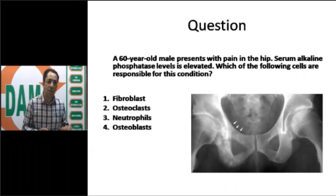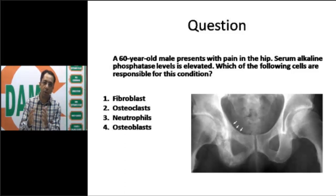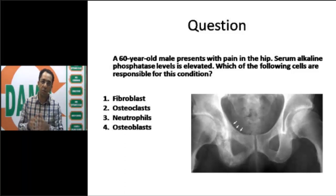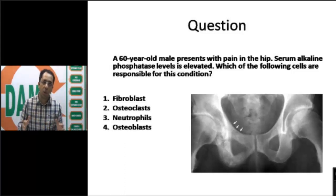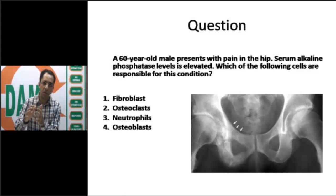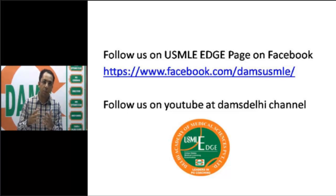Coming back to the question: the patient is 60 years old - we learned the disease typically presents after 55 with slight male predominance. Pain in the hip - the patient can be asymptomatic but can also present with pain. The key laboratory finding is elevated alkaline phosphatase indicating increased bone turnover, and the X-ray shows coarse trabecular network with thickening of the ileopectineal line - Paget's disease. But to score well, you must know which cell is responsible: it is primarily a disorder of the osteoclasts. The answer is osteoclasts.